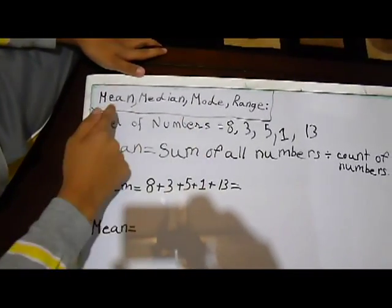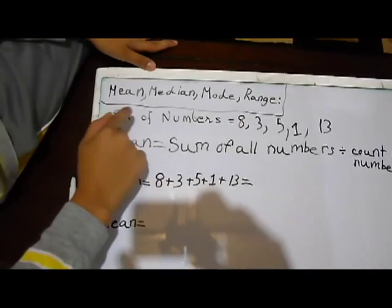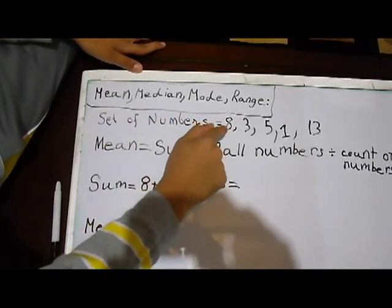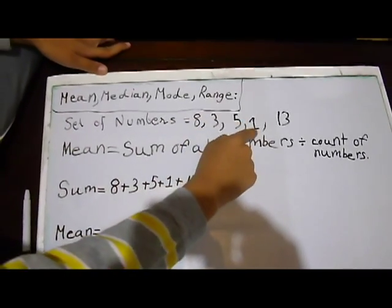Okay, here's the board I have found, and I have set up everything. So, the set of numbers I made is 8, 3, 5, 1, and 13.